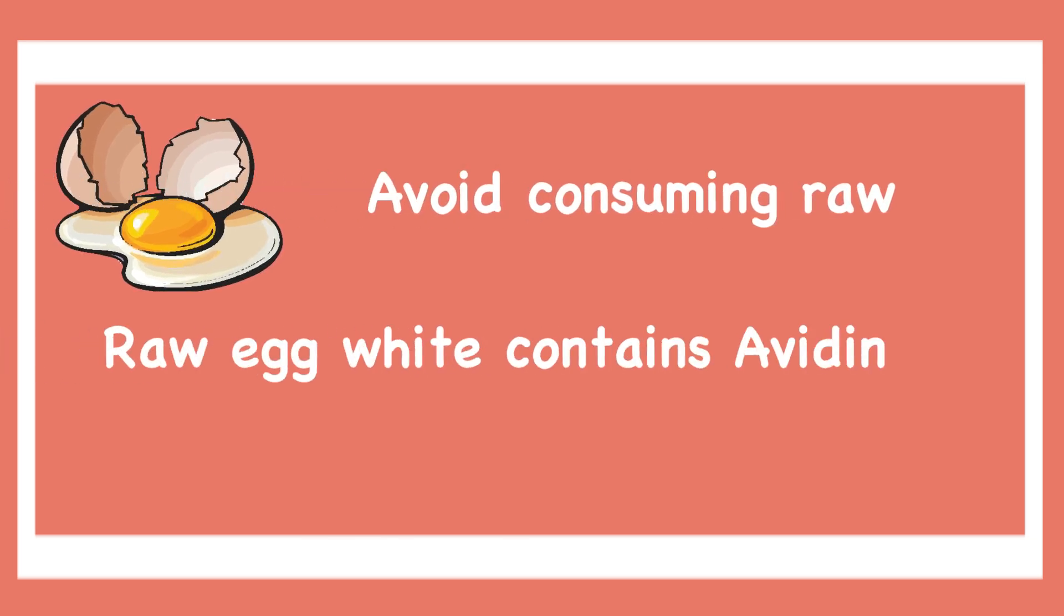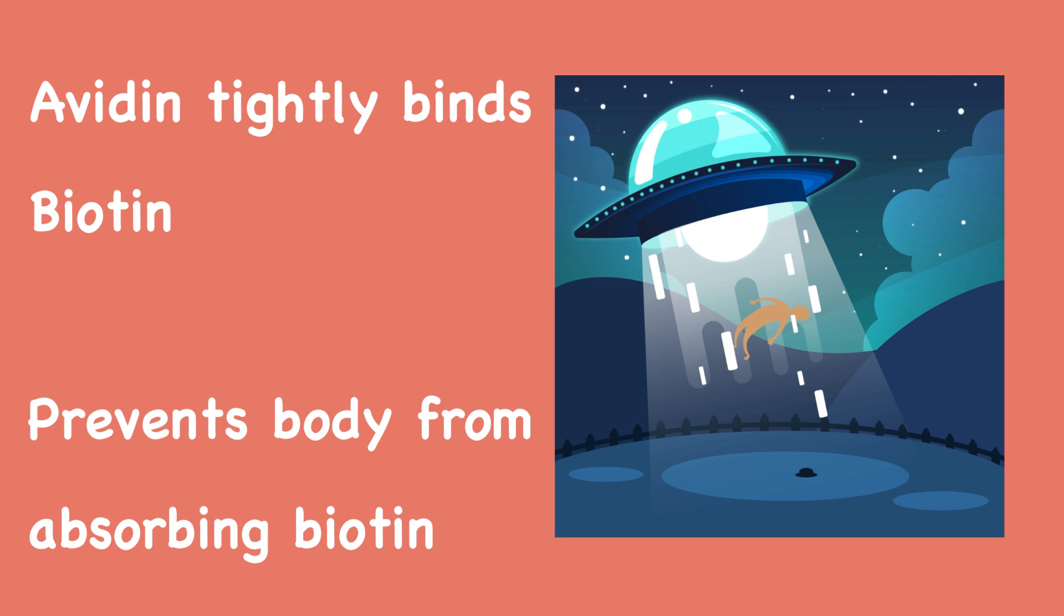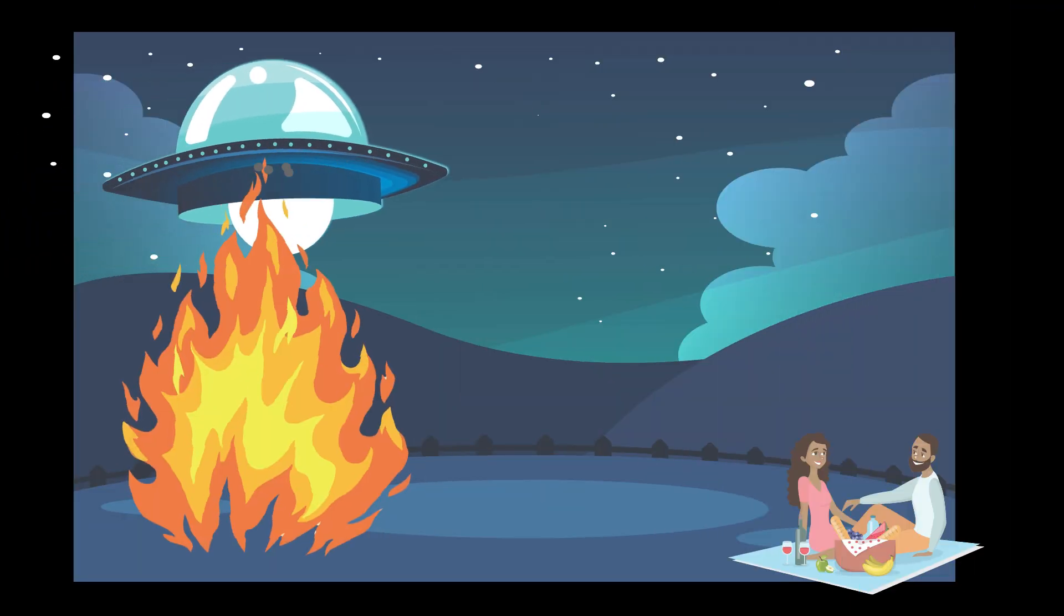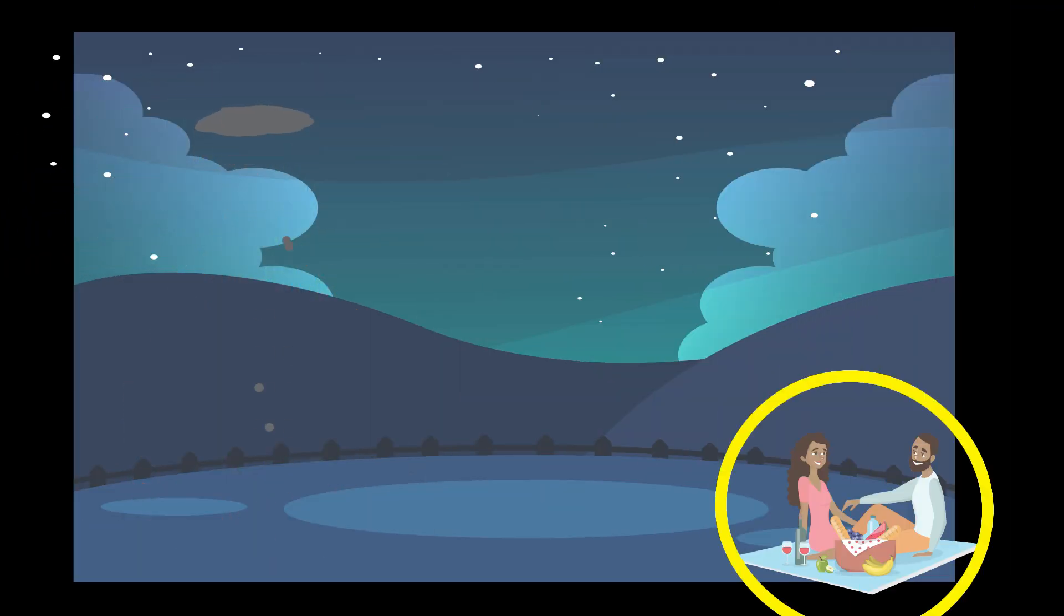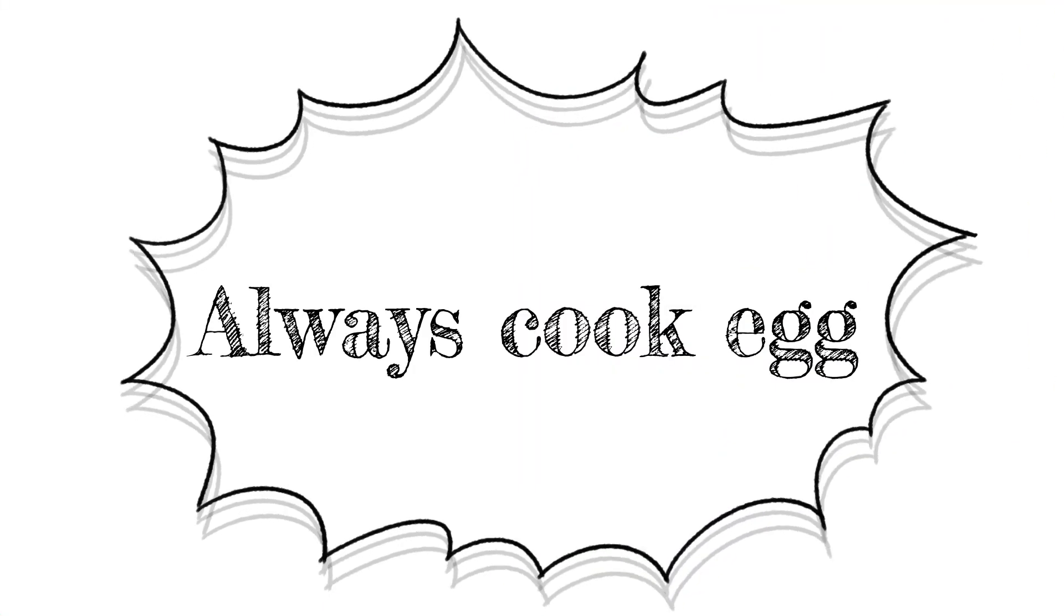Eggs are a good source of biotin, but you should avoid consuming them raw. Raw egg whites contain avidin, which is a type of sugar protein. It tightly binds biotin and prevents your body from absorbing it. Cooking destroys avidin and then biotin is available for your body to absorb.